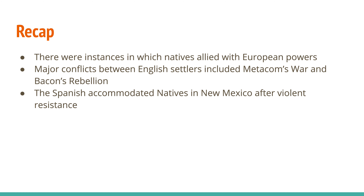To recap: there were instances in which Natives allied with European powers, especially in the Northeast. Major conflicts between English settlers and Natives included Metacom's War and Bacon's Rebellion — Bacon's Rebellion serving as both a cause for the rise of enslaved African labor and having its beginnings in land disputes with Natives. The Spanish accommodated Natives in New Mexico after their violent resistance in 1680. That's it for today — a couple more lectures left on period two.